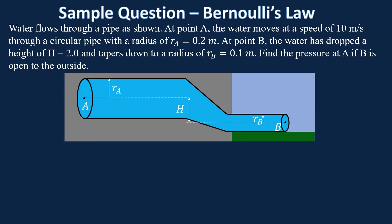Here's a typical Bernoulli's Law question. Water flows through a pipe. At point A, the water moves at 10 meters per second, and the radius at point A is 0.2 meters. At point B, the water drops to a lower height — two meters lower — and tapers down to a radius of 0.1 meters. Find the pressure at A if B is open to the outside. B being open to the outside means that at point B you're at atmospheric pressure — anytime a fluid is open to the outside air, it's at atmospheric pressure.